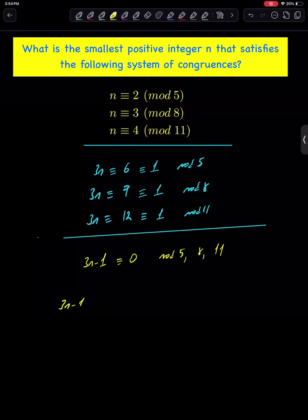Now, if we equalize 3n minus 1 to the least common multiple of 5, 8, and 11, which equals 440, we can find the smallest n.